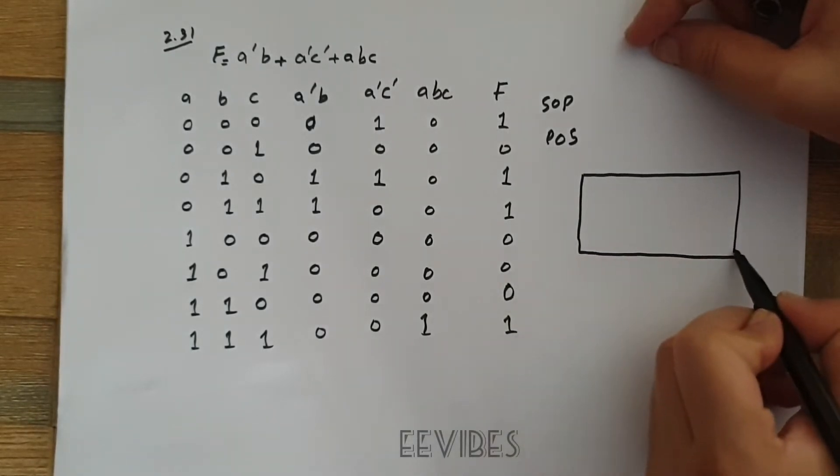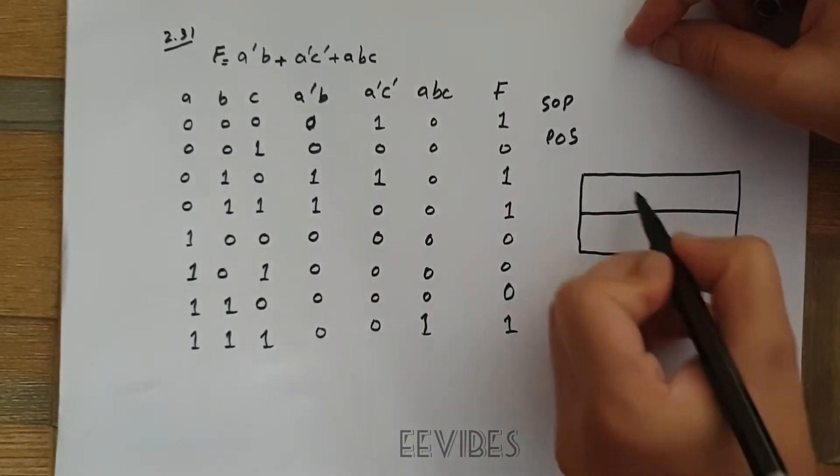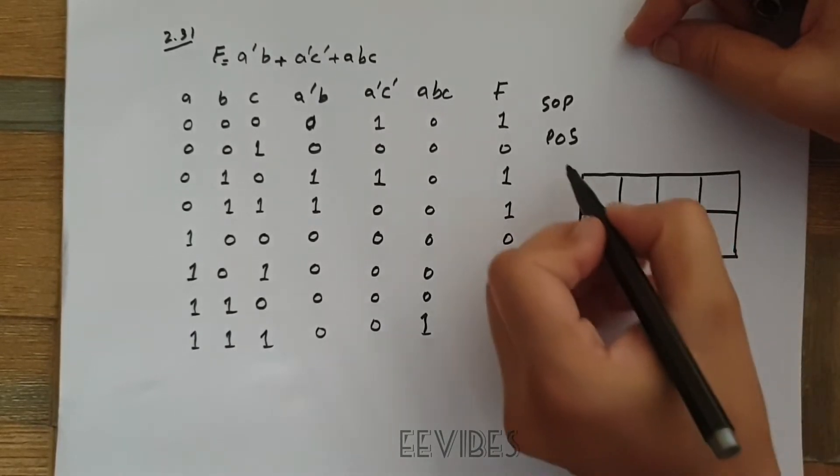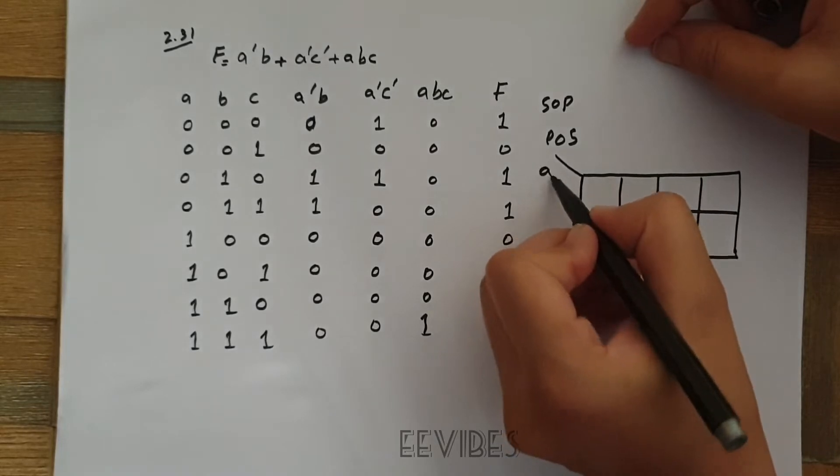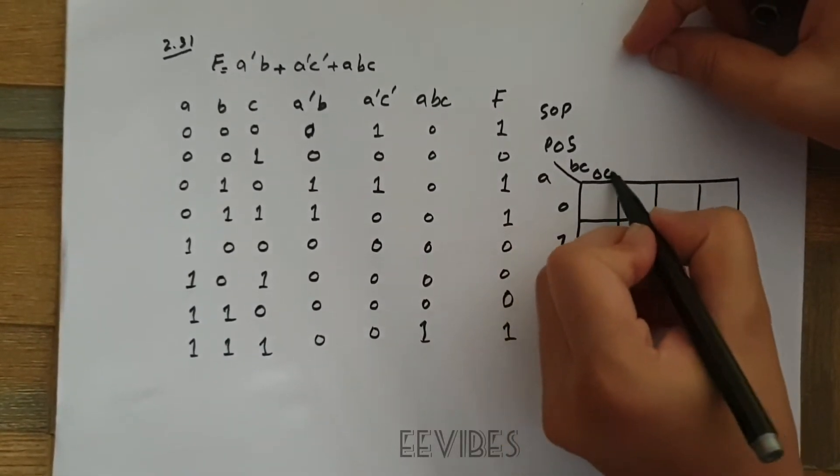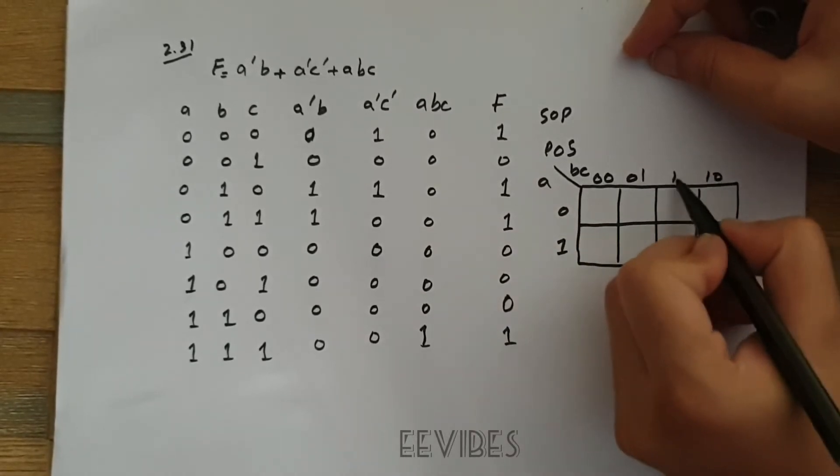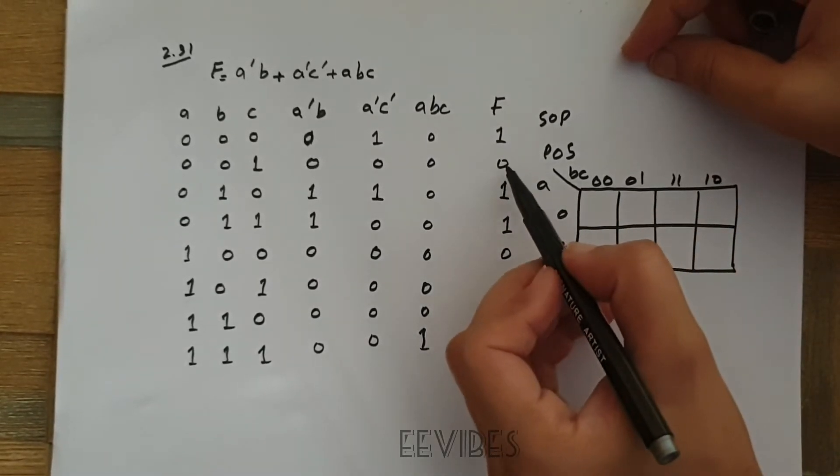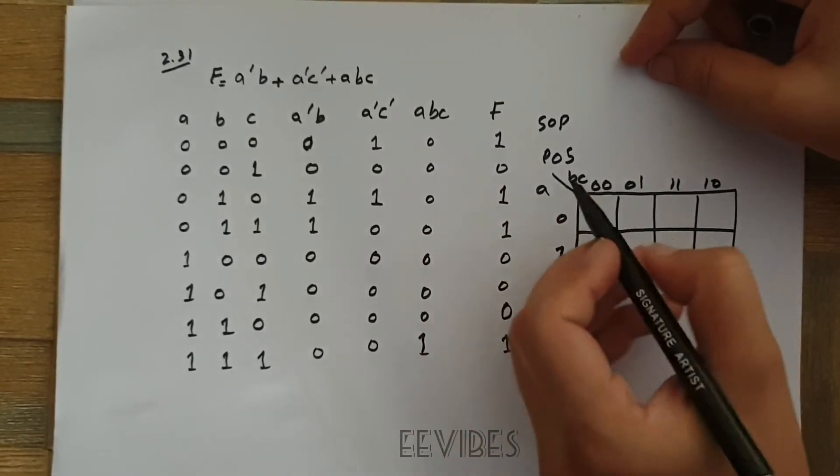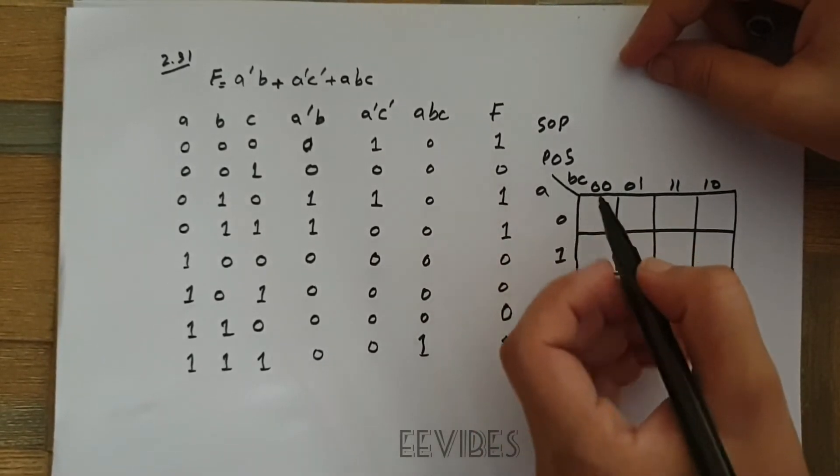we will actually combine the squares having the minterms equal to 0 and we will write them as the function complement. So three variables are abc. I will construct a three variable K-map and now I will place zeros in places of the minterms.